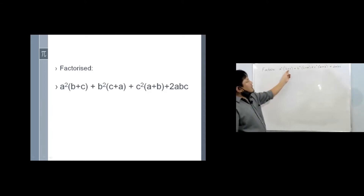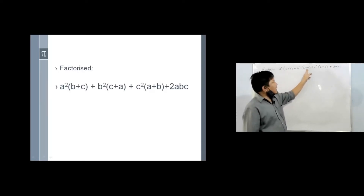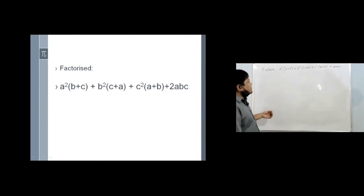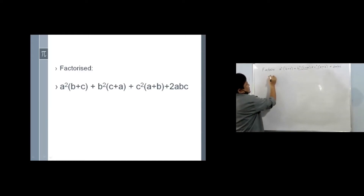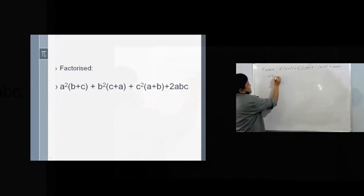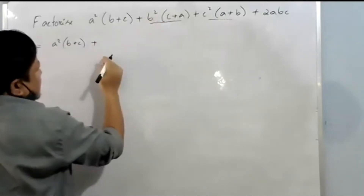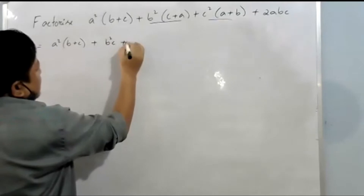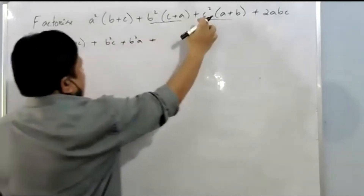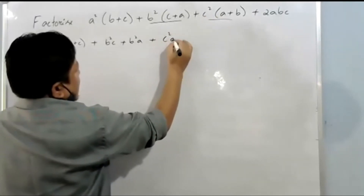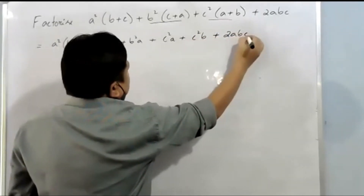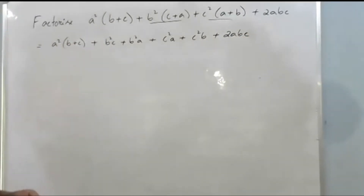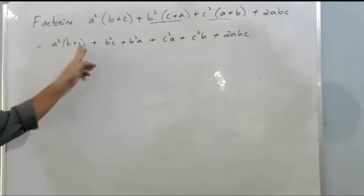From here, what we need to take out is either (b + c), (c + a), or (a + b) to make it common. To do that, we need to split up these two terms. Let's split it up: b²c + b²a, next term c²a + c²b + 2abc. The main point to remember is to take out (b + c) as common.